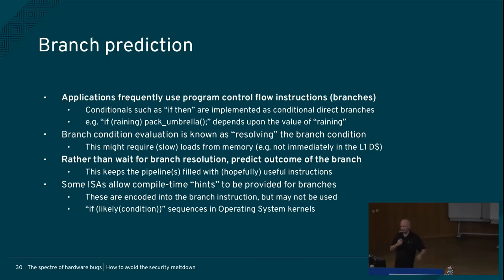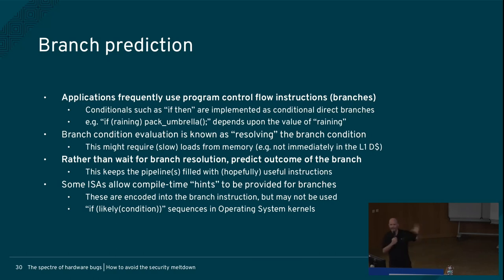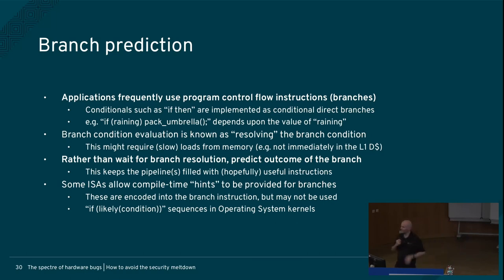Applications frequently use program flow instructions or branches — about one-fifth of code is branches. The process of working out what a branch is going to do is known as resolving the branch. Rather than wait for the outcome, we guess what's going to happen. If we're right, we keep running instructions; if we're wrong, we figure out how to deal with that. In some compiled languages you have things like likely and unlikely — but most chips actually ignore that today, because branch predictors have gotten so good they don't really need the software to tell them.